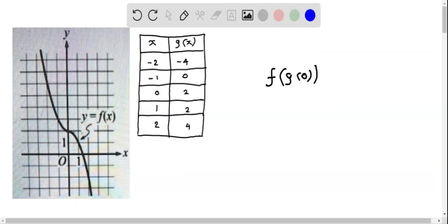Let's determine the value of this function expression, f of g of 0. This is a composition of two functions f and g, and we're going to find this using the table values for g of x as well as the given graph of the function f of x.